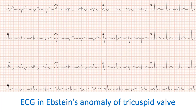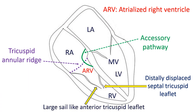In Epstein's anomaly, the right bundle branch is underdeveloped. The plicated atrialized right ventricle after repair of Epstein's anomaly is still arrhythmogenic. Some recommend incising the tricuspid annular ridges during surgery to disconnect potential accessory pathways, especially if the preoperative ECG has not shown an RBBB pattern.